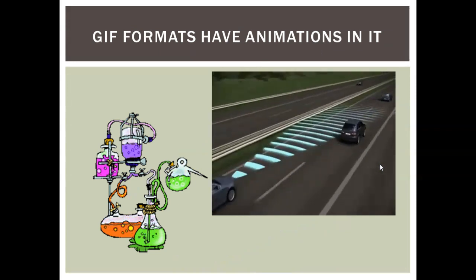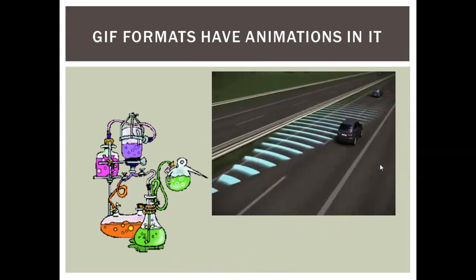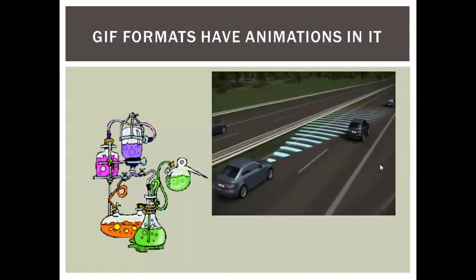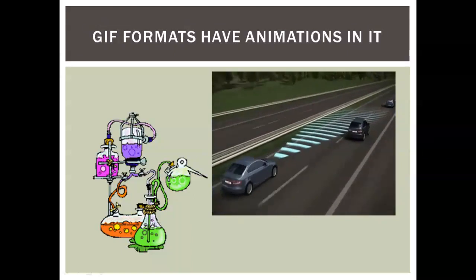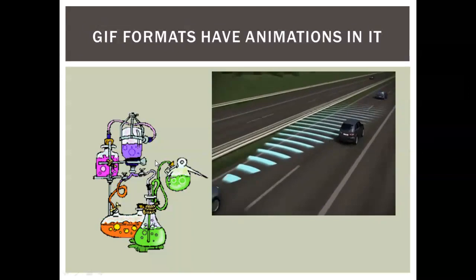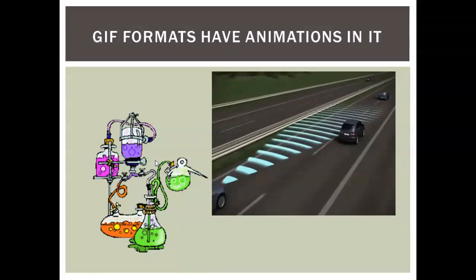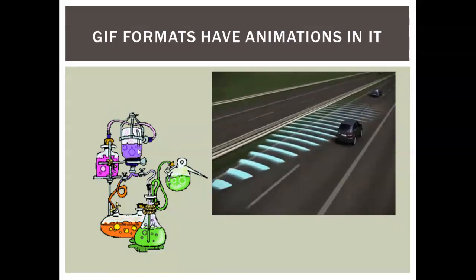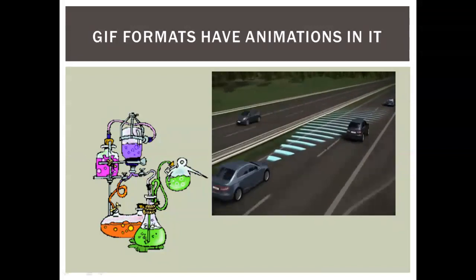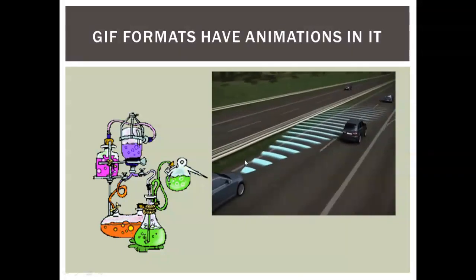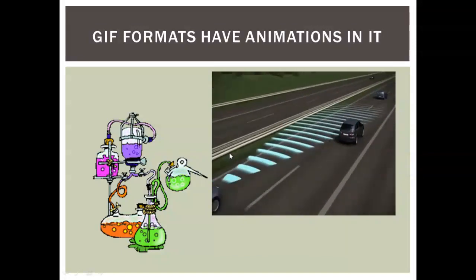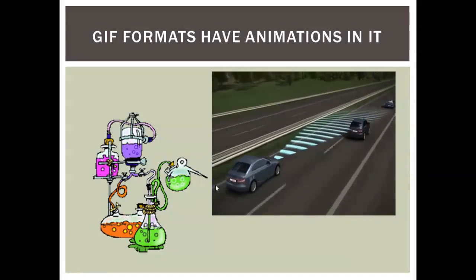The third type is images which have animation in them — these are called GIF images (Graphics Interchange Format). GIF images can have a background or no background; it is not compulsory to always have a background. So GIF can support both background and transparent background.